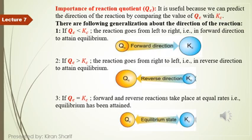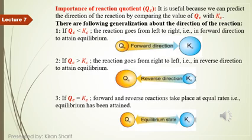The most important part of this topic is understanding the importance of the reaction quotient. It is useful because we can predict the direction of a reaction by comparing the value of QC with KC. There are following generalizations about the direction of reaction: the direction can be forward, reverse, or equilibrium.